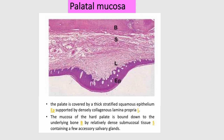Here you can see the histological picture of the palatal mucosa. It is covered by a thick stratified squamous epithelium supported by the lamina propria, which consists of dense collagenous fibers. The lamina propria is bound deeply to the underlying bone by a dense submucosal tissue, which consists of a few salivary glands.